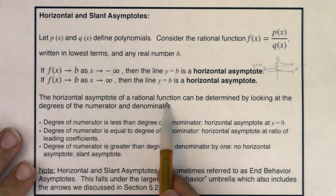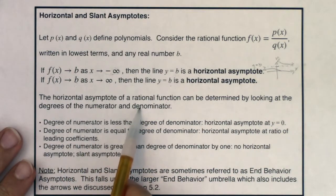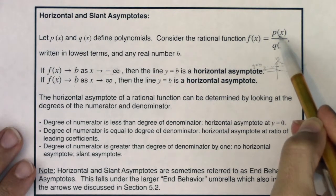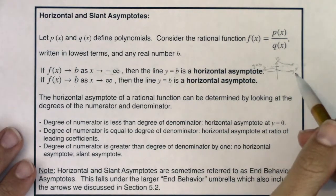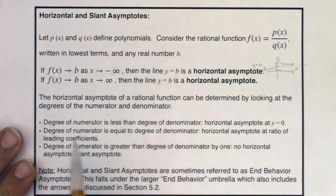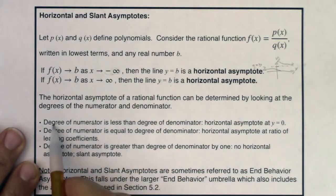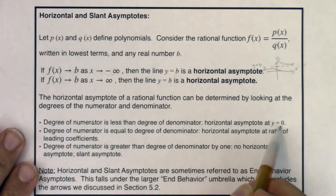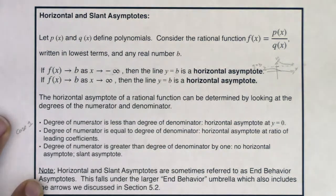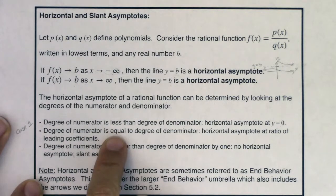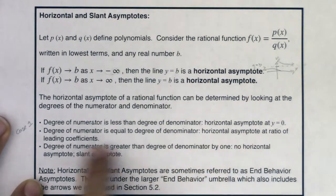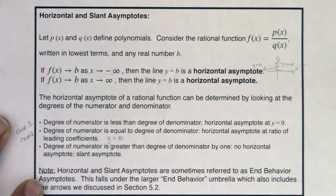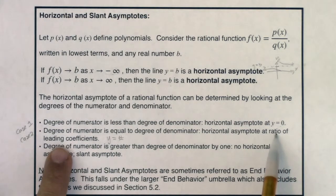The horizontal asymptote of a rational function can be determined by looking at the degrees of the numerator and denominator. Since we have a polynomial in the numerator and a polynomial in the denominator, there's a leading term in the numerator and a leading term in the denominator, and those are going to wind up being the only terms I really care about in terms of answering this question of end behavior. Here are three cases. If the degree of the numerator is less than the degree of the denominator, you're going to have a horizontal asymptote at the line y equals zero — call this case one. If the degree of your numerator is equal to the degree in your denominator, you will have a horizontal asymptote at the ratio of the leading coefficients — case two. Your horizontal asymptote will be the line y equaling a number, not zero — it will be the ratio of the leading coefficients.